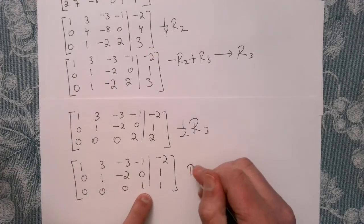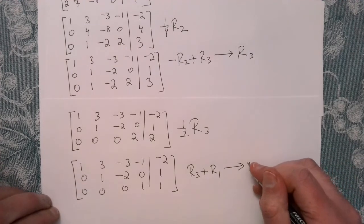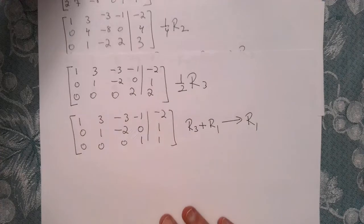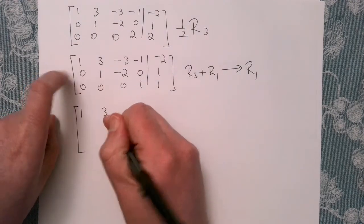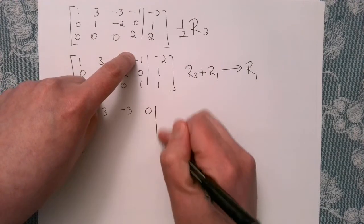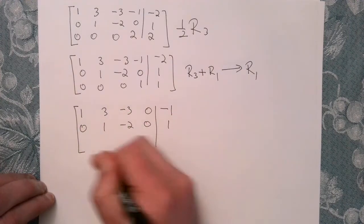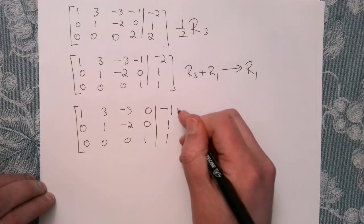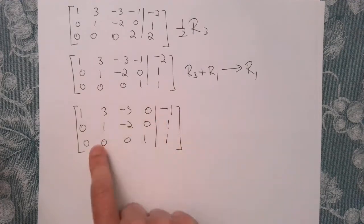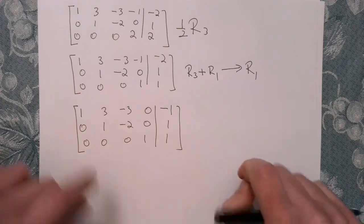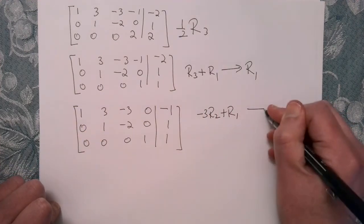We'll do row 3 plus row 1 to get a zero in that position, thinking about reduced row echelon form. That gives us 0 plus 1, 0 plus 3, 0 plus minus 3, and 1 plus minus 1 — so 0 there — and 1 plus minus 2. Row 2 and row 3 stay the same. Now let's use the row 2 pivot: do minus 3 times row 2, add to row 1, replacing row 1.